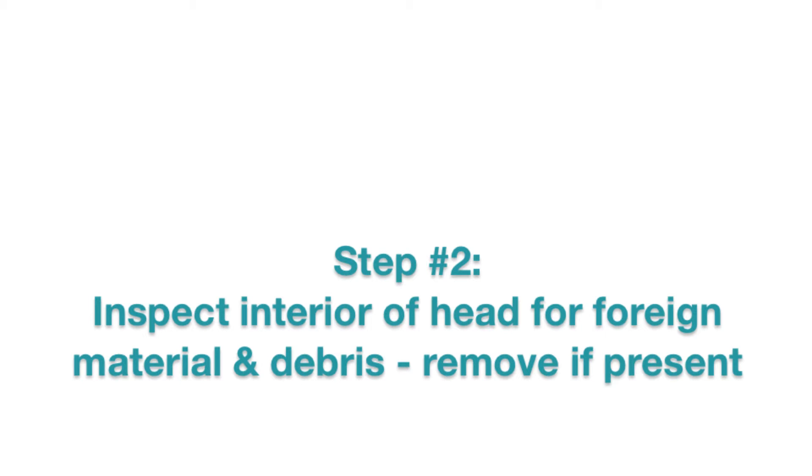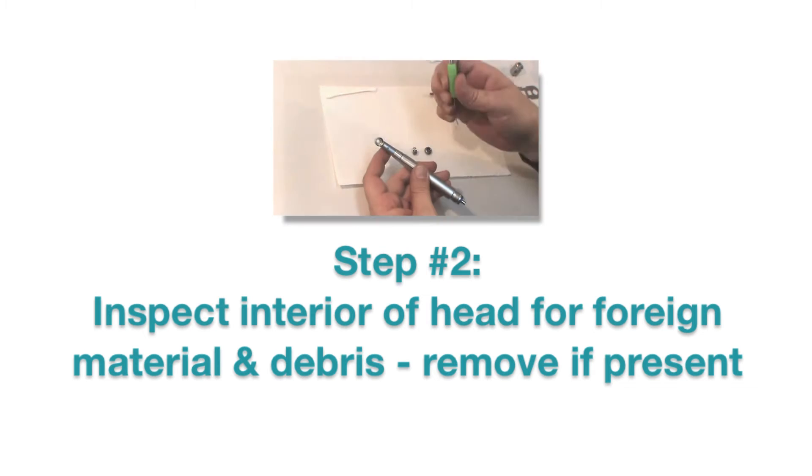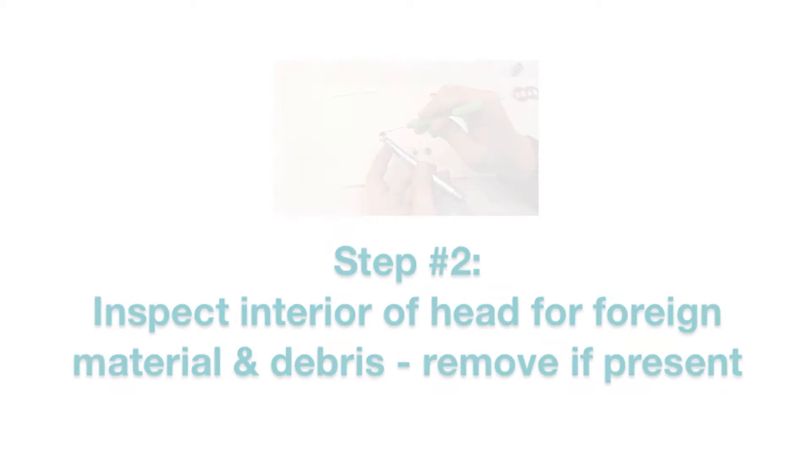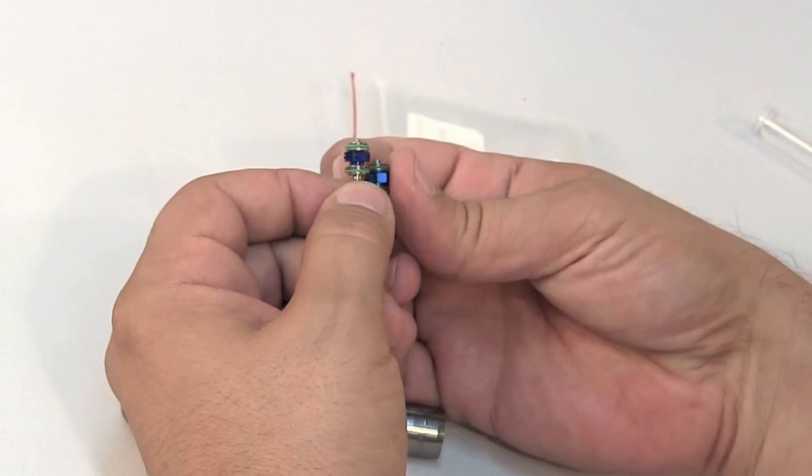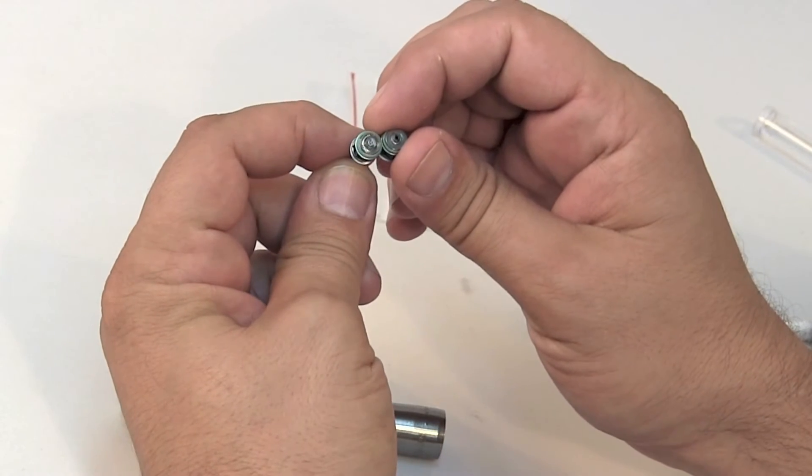Check the handpiece head for any debris. Use a scaler to remove any old shims, o-rings, washers, or bearing retainers. Compare the worn turbine to the new turbine to identify any components that may still be present in your handpiece.